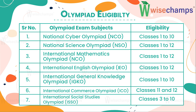For National Cyber Olympiad, the eligibility is from classes 1 to 10th. For National Science Olympiad, the eligibility is from classes 1 to 12th. For International Mathematics Olympiad, the eligibility is from classes 1 to 12th. For International General Knowledge Olympiad, the eligibility is from classes 1 to 12th. For International English Olympiad, the eligibility is from classes 1 to 10th. For International Commerce Olympiad, the eligibility is for classes 11th to 12th. For International Social Studies Olympiad, the eligibility is from classes 3rd to 10th.